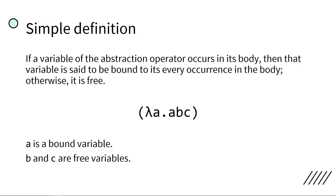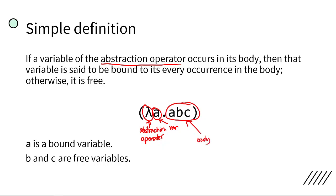If the variable is assigned in the abstraction — this is the abstraction operator — and if a variable of the abstraction operator occurs in its body, this is our body, then that variable is said to be bound to its every occurrence in the body. So if you notice, A occurs in the body, so A is a bound variable.